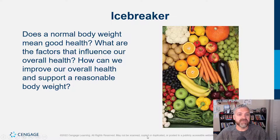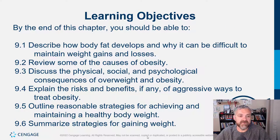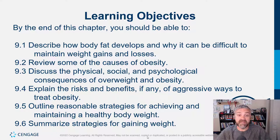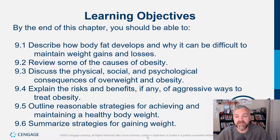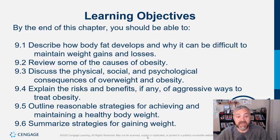How can we improve our overall health and support a reasonable body weight? It's usually a combination of diet and lifestyle — exercise, physical activity, stress reduction, sleep, and hydration. Now let's look at our learning objectives. The first: describe how body fat develops and why it can be difficult to maintain weight gains and losses. We'll look at how your body has a set point or settling point — it likes to fight changes and maintain homeostasis. Sadly, the human body is much better at fighting weight loss than weight gain.